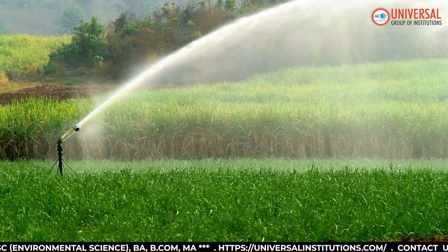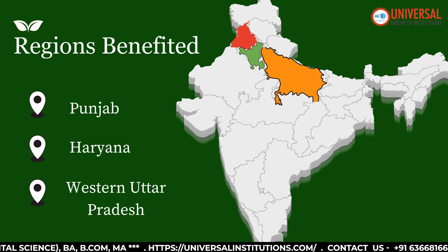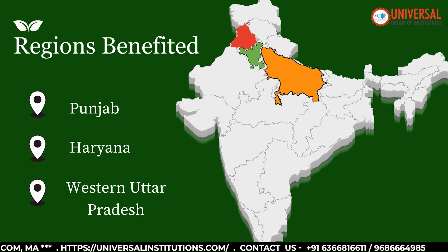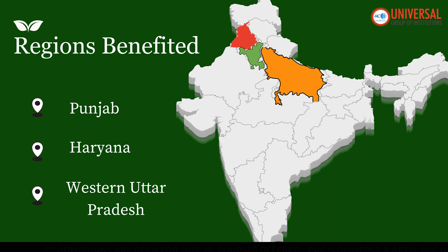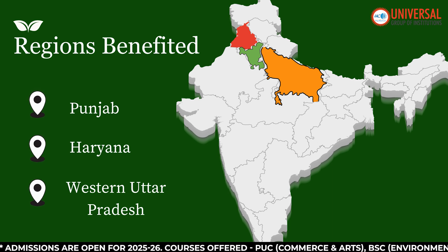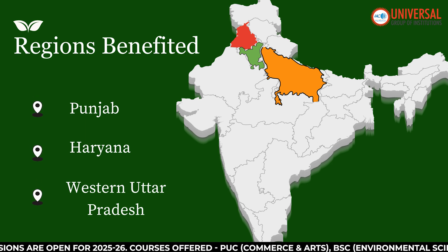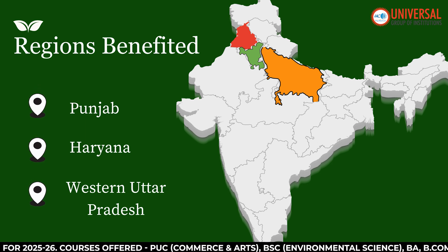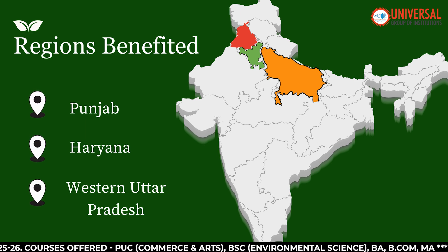Did the Green Revolution benefit all parts of India equally? No — it was more successful in certain regions. It had the greatest impact in regions with better irrigation and infrastructure, like Punjab, Haryana, and Western Uttar Pradesh, which were the primary beneficiaries. However, it had limited impact in rain-fed and underdeveloped regions.